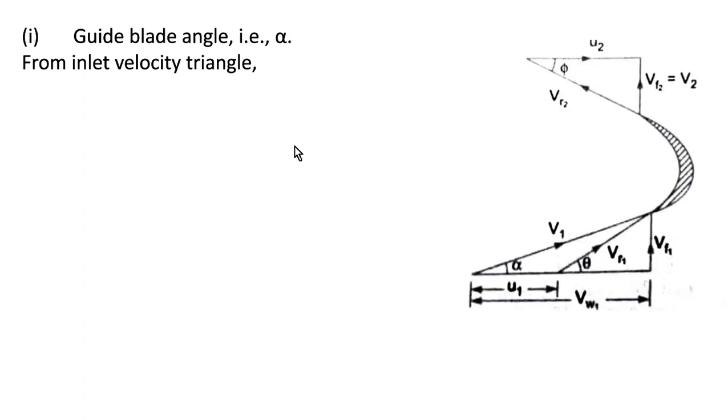First we need to find the guide blade angle, that is α. For that, we take the inlet velocity triangle from the given figure. tan α = vf₁/vw₁. Since we know the values of vf₁ and vw₁, substituting gives us 0.66.